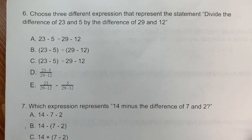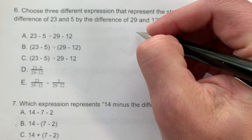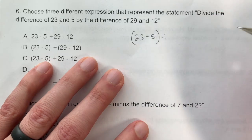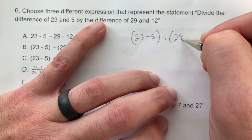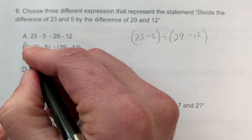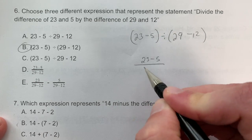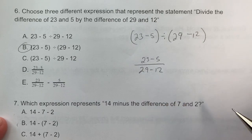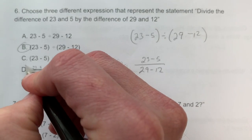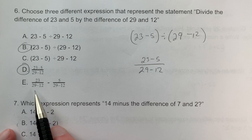Choose three different expressions that represent: 'divide the difference of 23 and 5 by the difference of 29 and 12.' One way: (23 − 5) ÷ (29 − 12) — that is option B. Another way, since this is division, is to write it vertically as a fraction: the difference of 23 and 5 over the difference of 29 and 12 — that is option D.